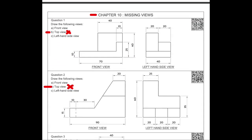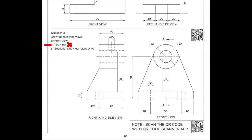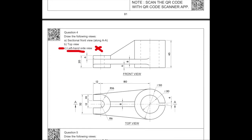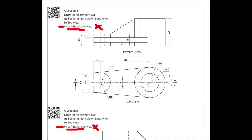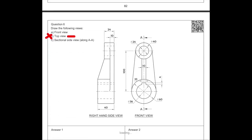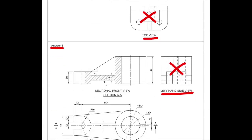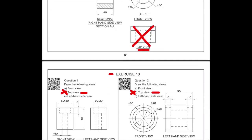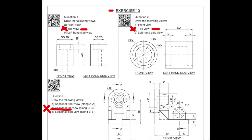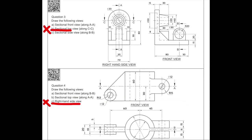In chapter 10, missing view: we don't have to draw the top view given two views. We have to draw sectional also, but we don't have to draw the missing third view. There is no side view — only sectional front view and top view. We simply draw two views and do the section. Since we have studied section orthographic, they expect us to draw sectional view — no missing view, only two views.